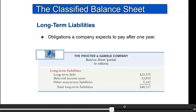Contrast that to long-term liabilities. If a building was purchased with borrowed money from a bank, that's called a mortgage — so there may be a mortgage payable, or another long-term debt with a bank. You don't have to pay it all off in the next year; you pay a portion, and that portion is shown in current liabilities, while the rest is shown in long-term liabilities.